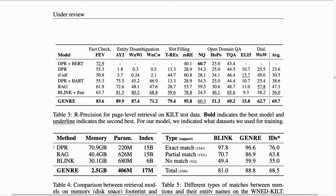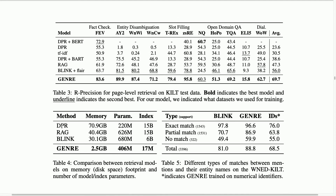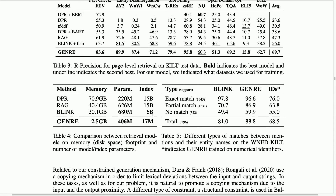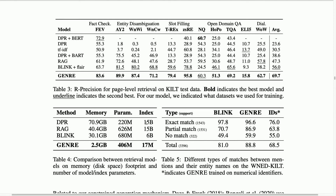This also leads to quite significant parameter savings. Rather than storing information for each entity or building a database of all Wikipedia articles, you only train this model, which learns to use the context of the query and generate a sequence of tokens leading to a correct Wikipedia title. The only additional component is the index data structure used to constrain generation, which is about 600 megabytes — quite manageable.